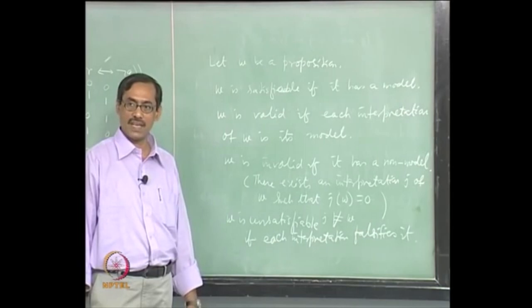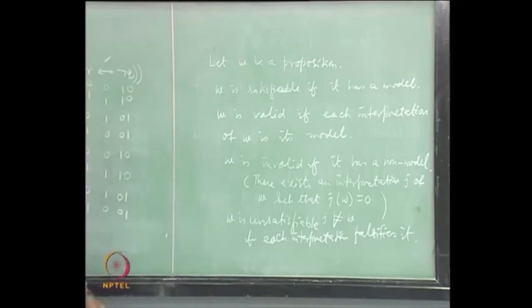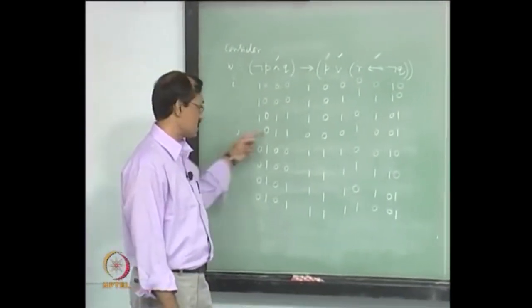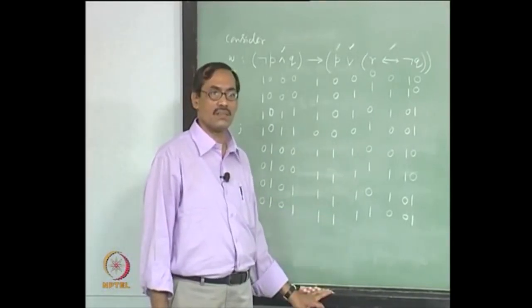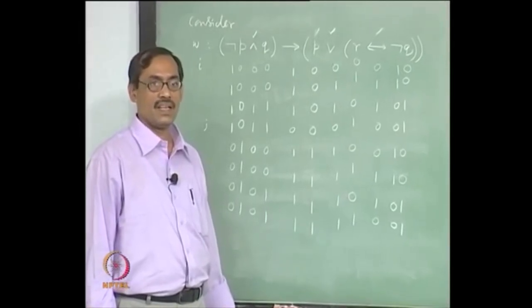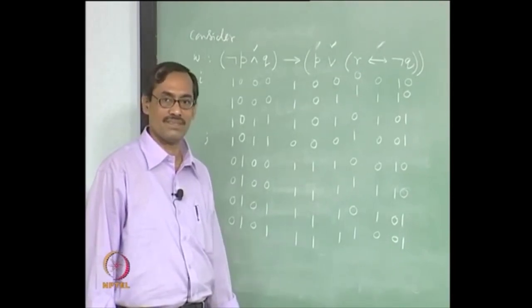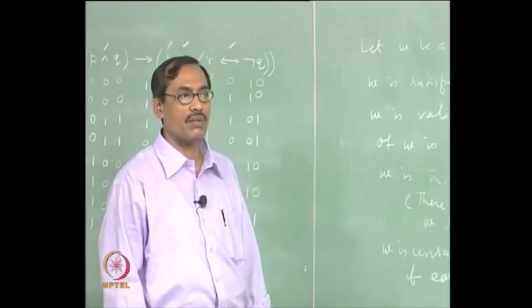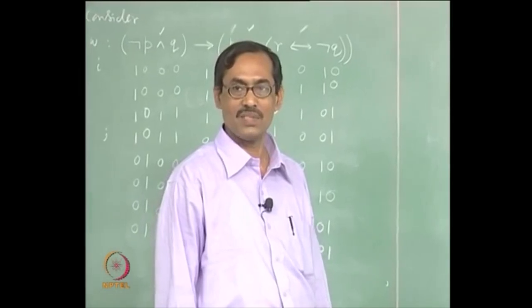If something is not satisfiable, then it is invalid — unsatisfiability implies invalidity. For example, take bottom. But there can also be propositions which are both satisfiable and invalid. For example, this proposition: it is satisfiable because i is a model of it; it is invalid because j is a non-model of it. Such propositions are called contingent propositions. Contingent means having some information content.